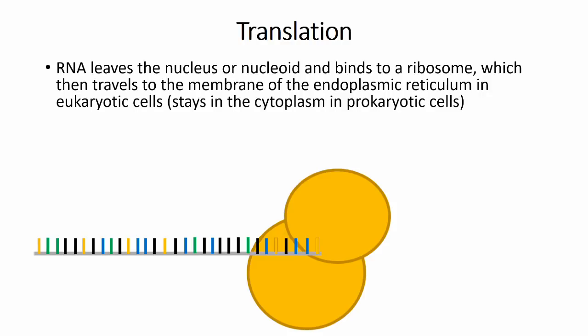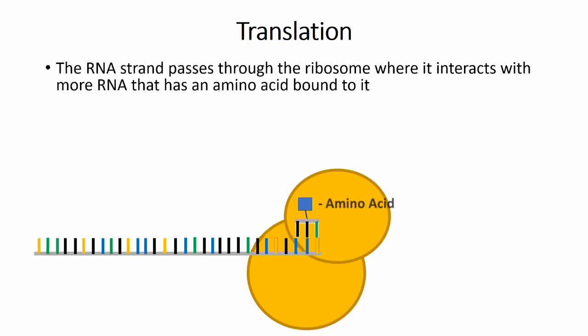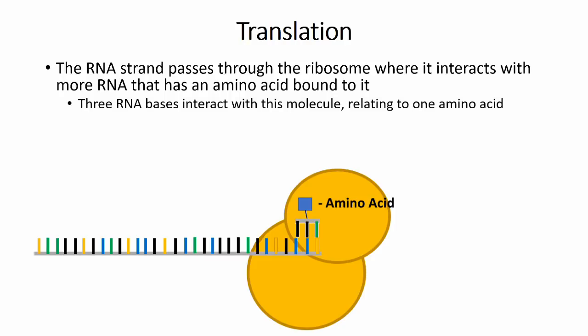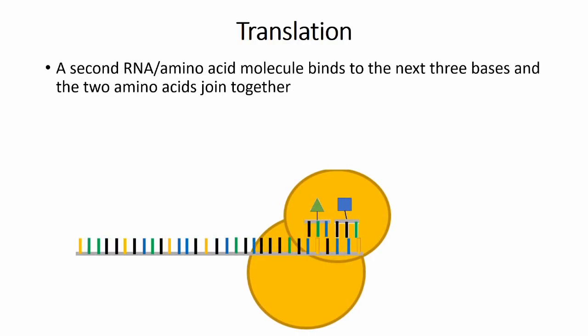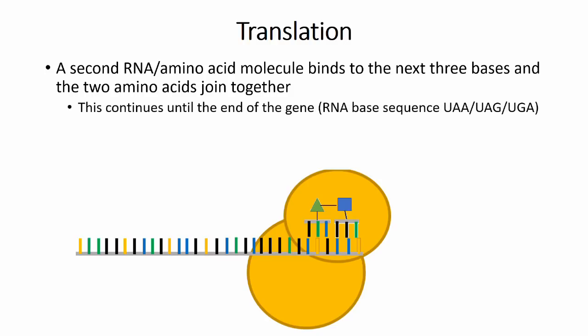From here the RNA passes through the ribosome. The ribosomes contain other molecules of RNA that have an amino acid molecule associated with them. These molecules will bind to the RNA strand using three bases that complement the order of the bases on the strand. Each of these three bases relates to one RNA-amino acid combination molecule and typically begins with the sequence AUG. Once the first amino acid is in place, the RNA strand moves further through the ribosome, allowing a second molecule to attach using the next three bases, bringing with it a second amino acid which is then joined to the first. This process continues until the ribosome reaches a set of three bases that tell it to stop — which can be one of three stop codons: UAA, UAG, or UGA.